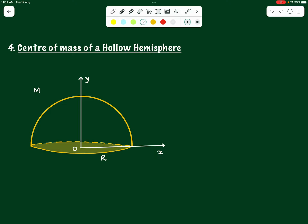If we want to find out the shape of the small elemental part that we divide this hemisphere into — so that we can cover the whole hemisphere while integrating for the x and y coordinates of center of mass — it will be best if we cut it horizontally into rings. Just drawing a line and taking a ring won't help though.